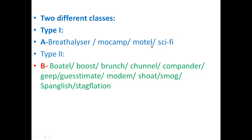Motel is a hotel where you can park your car near your room. Type 2 is represented by the B examples: bowtel, brunch, channel, compander, and so on. Just have a look at them.